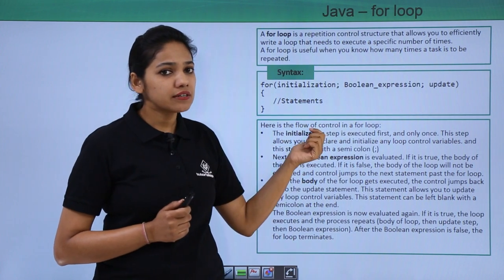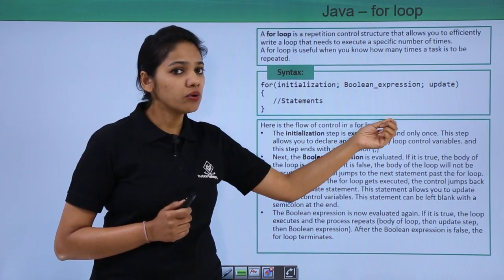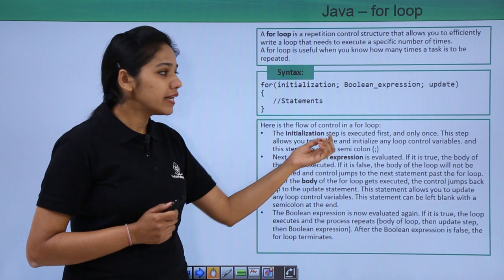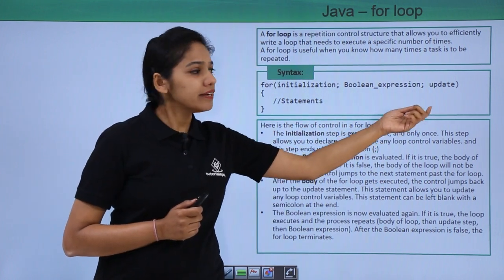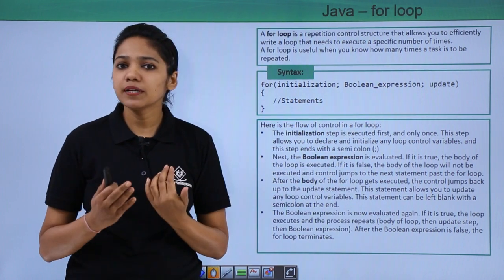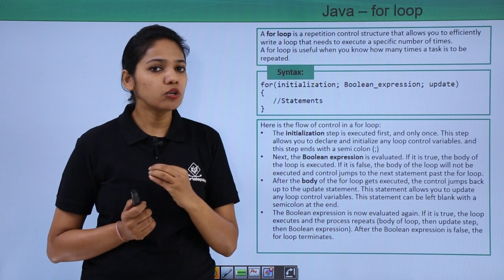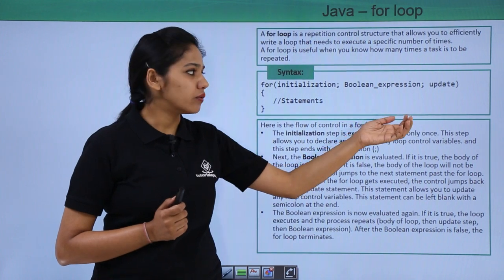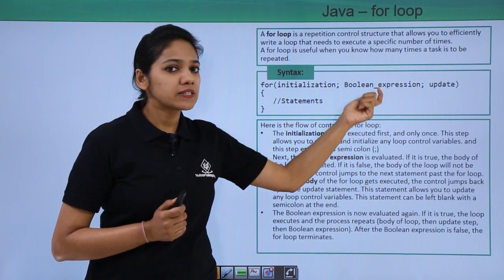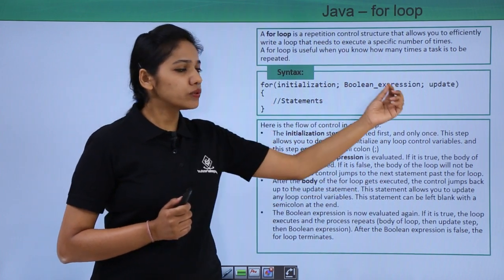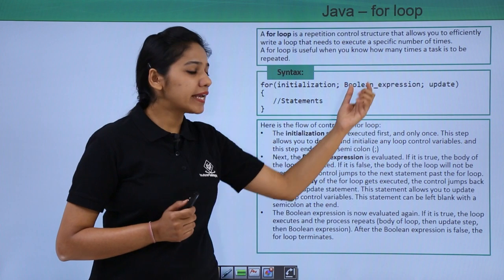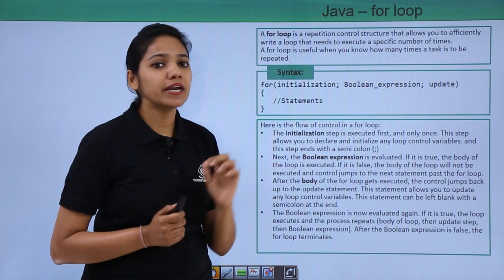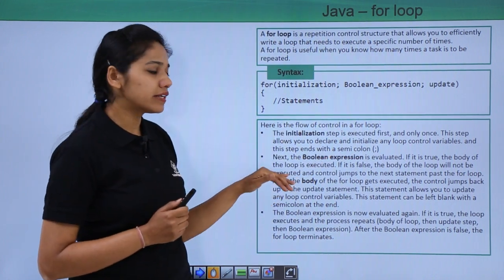What happens is that once the condition is true, it comes inside and executes the block of statements. Once it executes the block of statements, it goes back to the update statement. The update may be an increment or decrement — we need to stop our loop after a certain number of times, so we increment the initialized value. Once the block of statements executes, it goes to the update statement, then again checks the condition. But if the condition is false, it stops running the loop and comes outside.